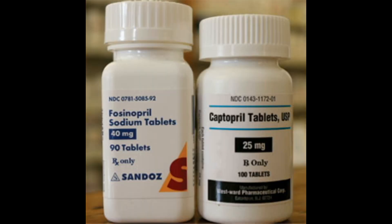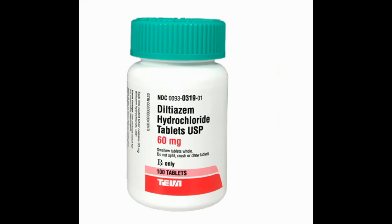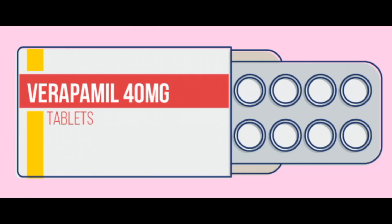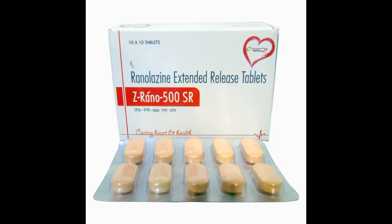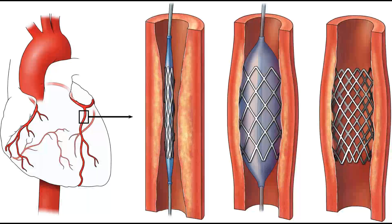Calcium channel blockers like diltiazem and verapamil relax the coronary arteries and cause peripheral vasodilation. The drug nicorandil has both arterial and venous vasodilating properties. The drug ranolazine is a cardio-selective anti-ischemic agent.